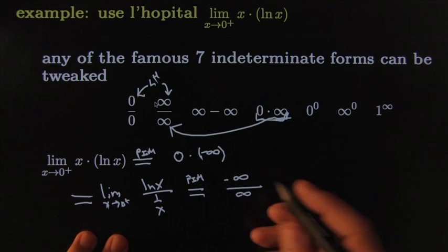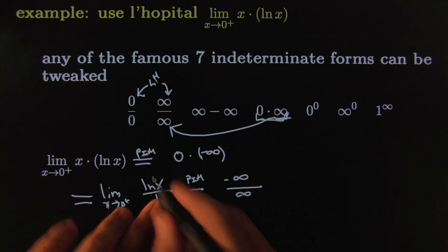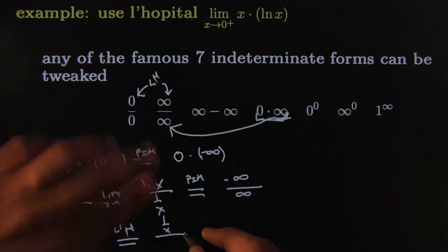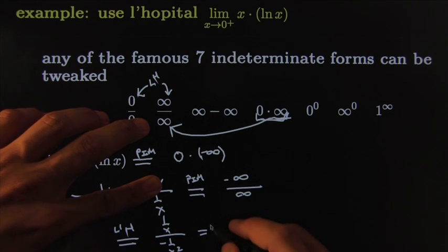So now, now I can apply L'Hopital. I'll do it right here. L'Hopital. And this will give me the derivative on the top—that would be 1 over x. The derivative on the bottom—that would be negative 1 over x squared.